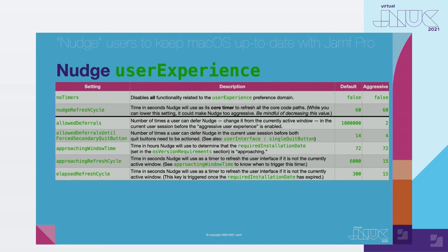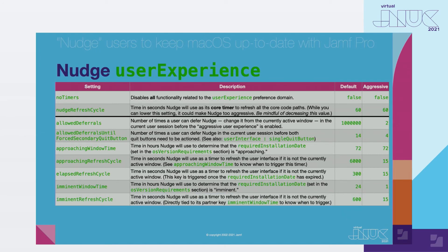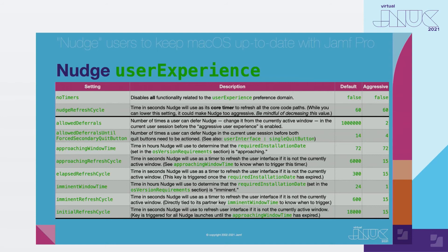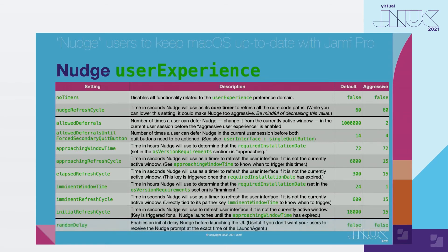Imminent Window Time is the number of hours Nudge uses to determine that the required installation date is imminent, and Imminent Refresh Cycle is the number of seconds before Nudge will refresh its UI. Once the Approaching Window Time has expired, Initial Refresh Cycle is the number of seconds Nudge will use to refresh its UI. If you set Random Delay to true, Nudge will wait the number of seconds specified in Max Random Delay in Seconds before launching its UI. So if you use the included launch agent, which executes on the hour and half past the hour, you may not want all your users prompted exactly at the top and bottom of each hour. When testing, I recommend leaving Random Delay at its default of false, and then for production, setting Random Delay to true.